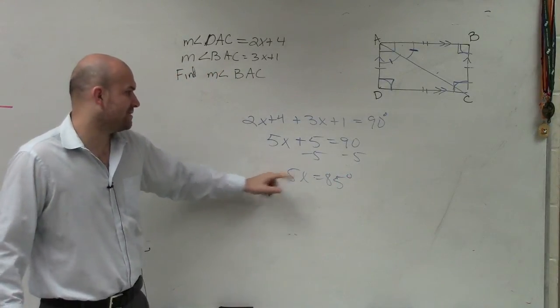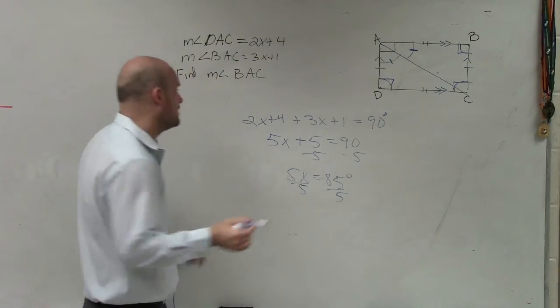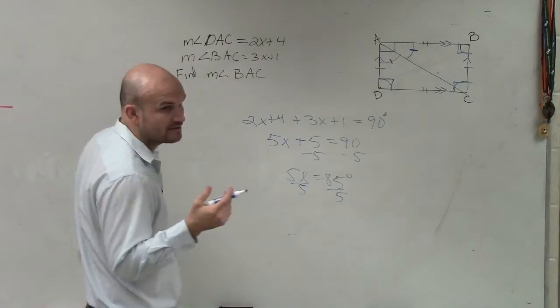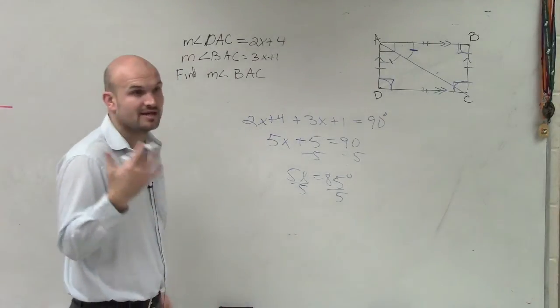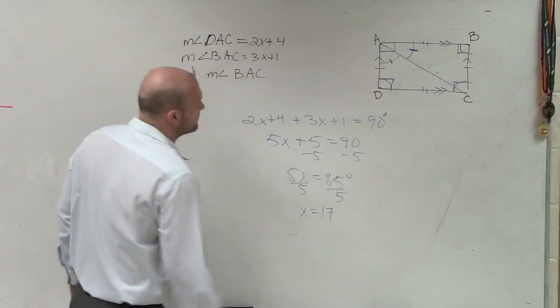85 degrees. And then we divide by 5. Divide by 5. 5 goes into 5, 50, 10 times. And then goes into 35, 7 times. 5 plus x equals 17. Very good.